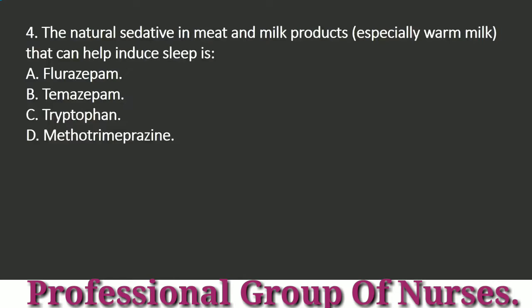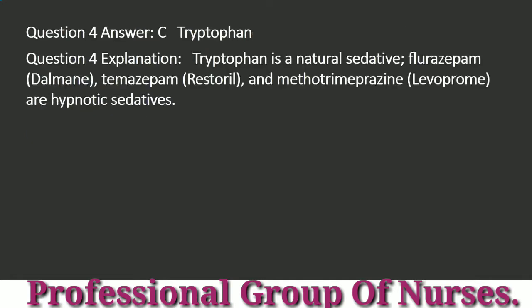Question 4: The natural sedative in meat and milk products, especially warm milk, that can help induce sleep is: a. Flurazepam. b. Temazepam. c. Tryptophan. d. Methotrimeprazine. Answer: c. Tryptophan. Explanation: Tryptophan is a natural sedative. Flurazepam (Dalmane), Temazepam (Restoril), and Methotrimeprazine (Levoprome) are hypnotic sedatives.